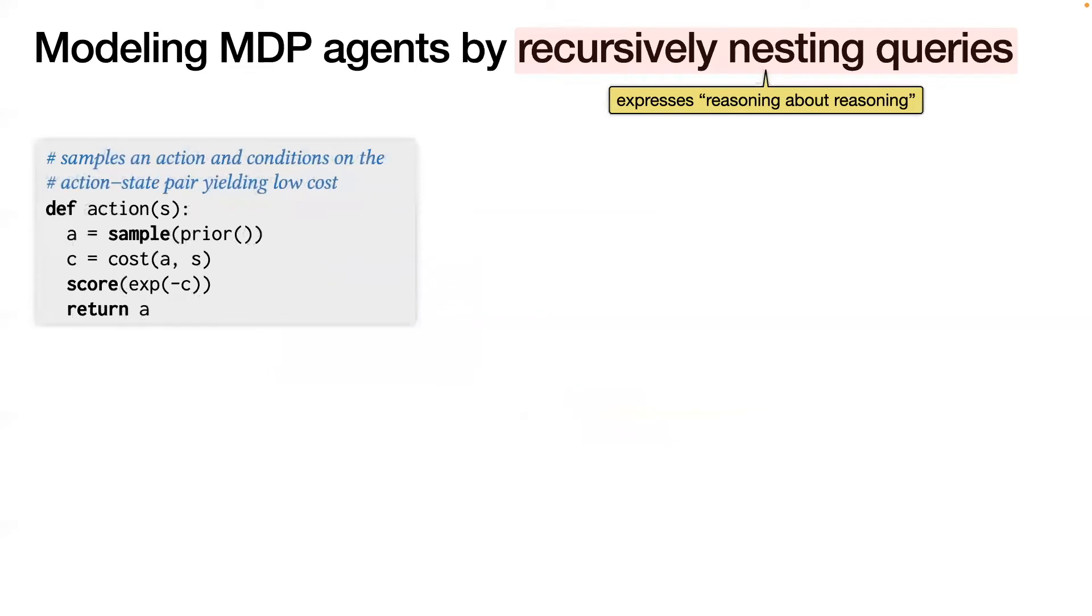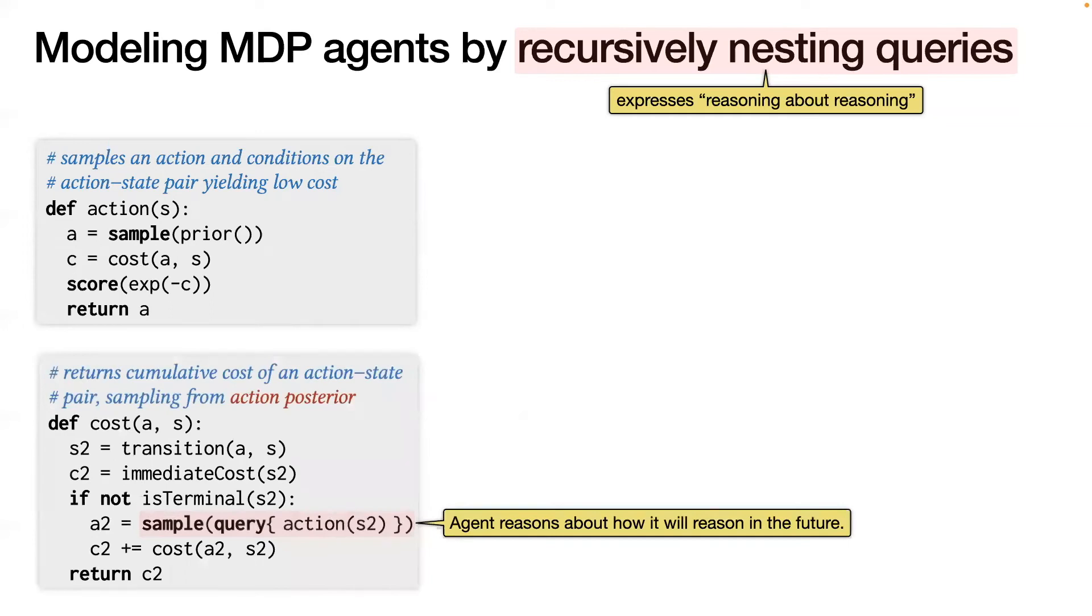An example is modeling an agent in the Markov decision process, where the agent chooses an action at each step to transition from one state to another. The MDP agent makes a sequence of actions and traverses a sequence of states. So to make rational choices, the agent must reason about the cumulative cost that will be incurred by choosing an action at a given state. So the action and cost functions are mutually recursive, with the queries recursively nested, modeling how the agent reasons about its own reasoning in future states.